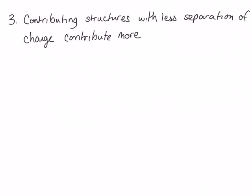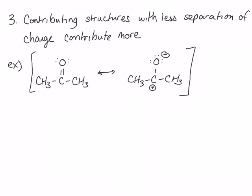The third rule is that contributing structures with less separation of charge are lower in energy and contribute more. For example, let's look at the structure of acetone, which has two contributing structures. The structure on the left shows no separation of charge — all of its atoms are neutrally formally charged. On the right, we have a negative and a positive charge separated within the same molecule, making that structure more unstable, higher in energy, and making the structure on the left the major contributor. The structure on the right also breaks the previous two rules in that it has fewer covalent bonds and an unfilled valence shell.